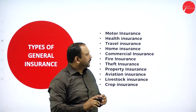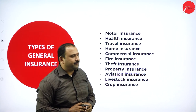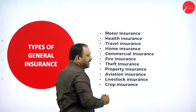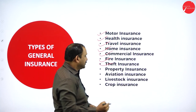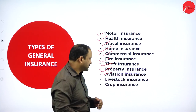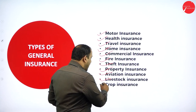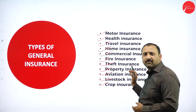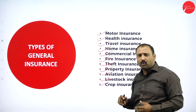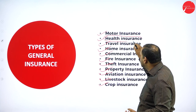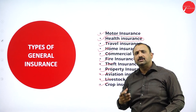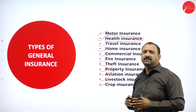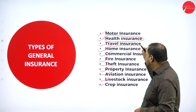Let's have a quick look at the types of general insurance: motor insurance, health insurance, travel insurance, home insurance, commercial insurance, fire insurance, theft insurance, property insurance, aviation insurance, livestock insurance, and crop insurance. Motor insurance is quite known. Health insurance is not only regarding life but also healthcare, which is slightly different from normal life insurance.